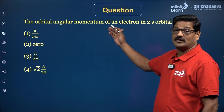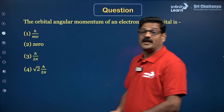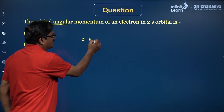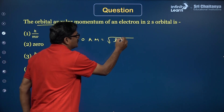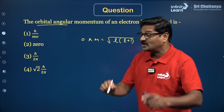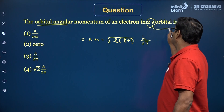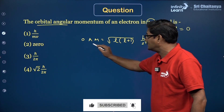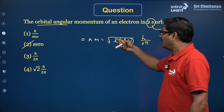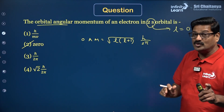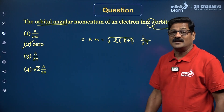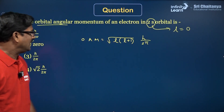Question 1: What is the orbital angular momentum of an electron in the 2S orbital? Orbital angular momentum = √(L(L+1)) × h/2π. For the 2S orbital, L = 0. Substituting, the orbital angular momentum = 0. Don't be trapped by the number 2 — use the orbital type to find the azimuthal quantum number. The answer is 0.